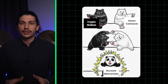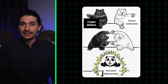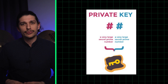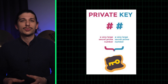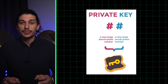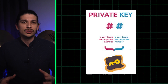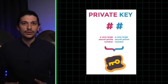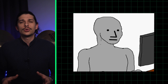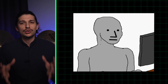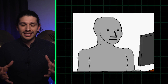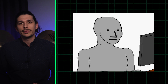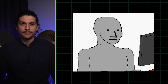A handful of use cases for account abstraction already exist, and people in the community are excited. First and foremost, account abstraction will allow developers to spin up non-custodial wallets for users without them ever having to know what a private key is. This is hugely significant because the end of private keys would be the end of a serious entry barrier for wider crypto adoption.